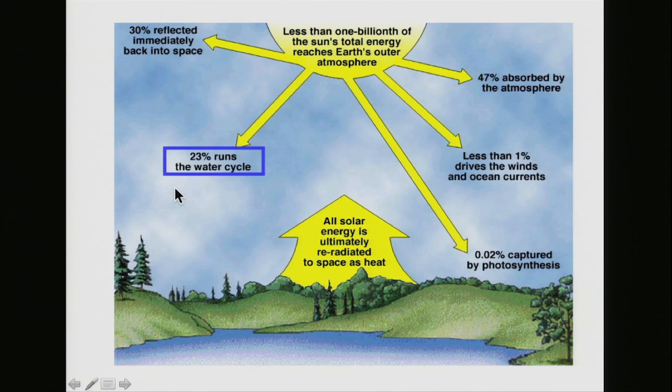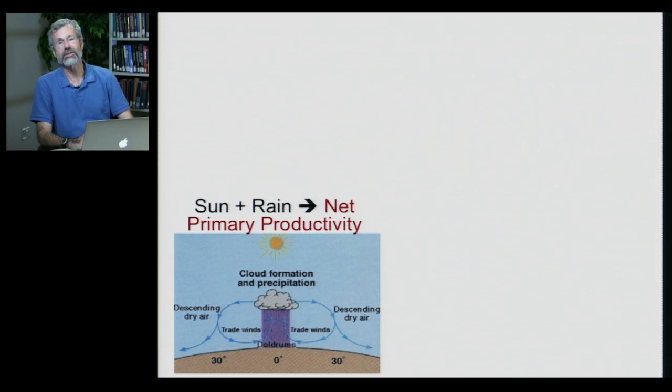Rainfall is an important consequence of the heat that arrives on the earth from the sun. And photosynthesis, of course, is ultimately what feeds us, providing carbohydrates for all living things.